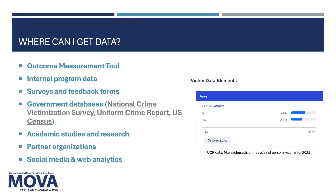The Uniform Crime Report is a law enforcement database viewable by state, and earlier this year they launched a new database with more victim-focused metrics — you can sort it by your state and look at different victim data elements. Census data is also linked so you can use that to compare and analyze demographics. You can also look for academic studies and research from universities and research institutes. Partner organizations and coalitions can provide insight into what other services are being provided in your area. And social media and web analytics can show public engagement, awareness levels, and effectiveness of online campaigns.